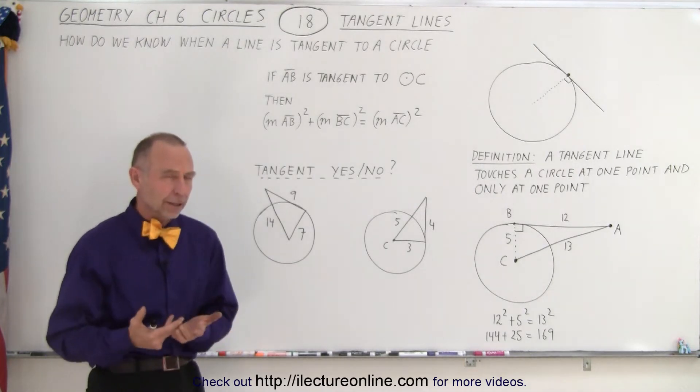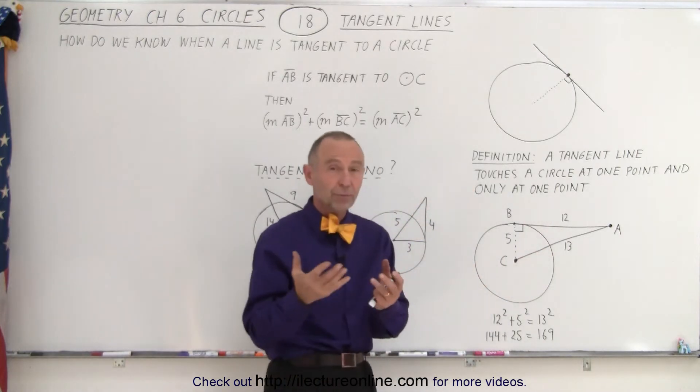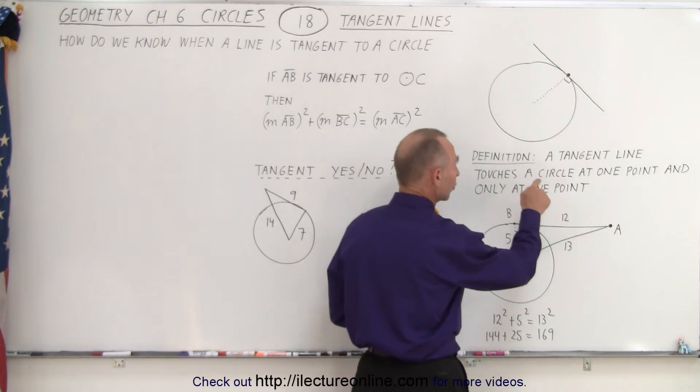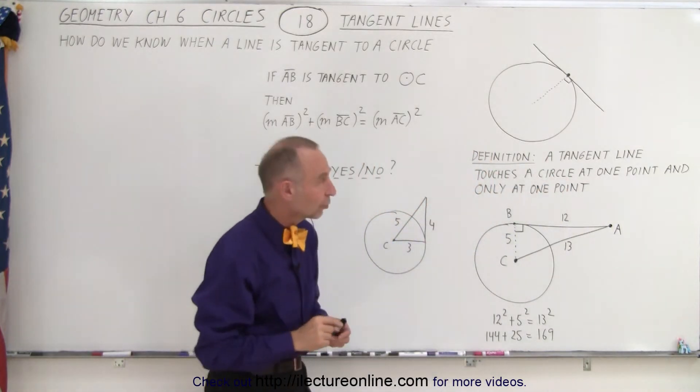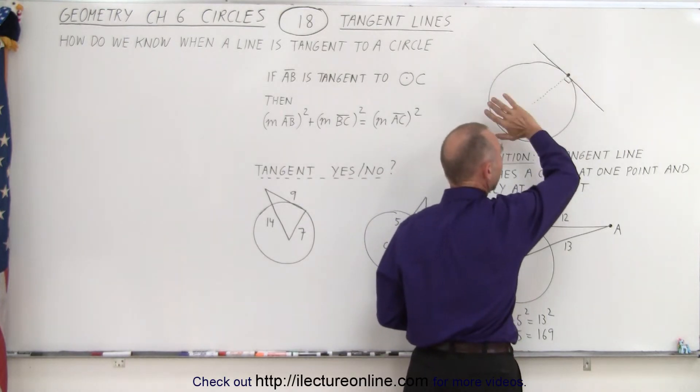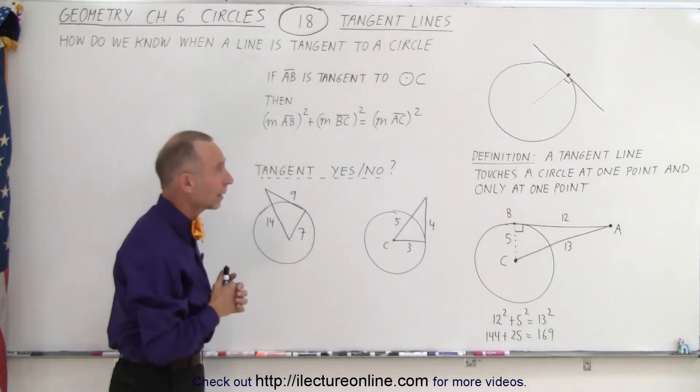What is the definition of a tangent line? Well, a tangent line touches, and of course this is in respect to circles, if a line is tangent to a circle, then it touches the circle at one point and only one point. So there's only one point on the circle where the line passes through and no other points are crossed by that line.